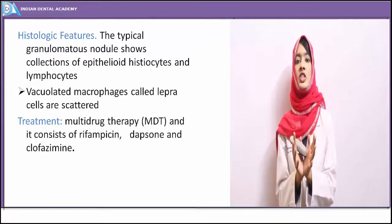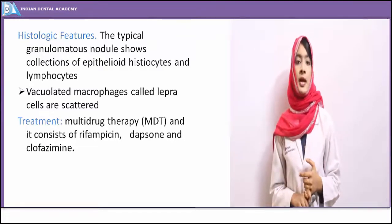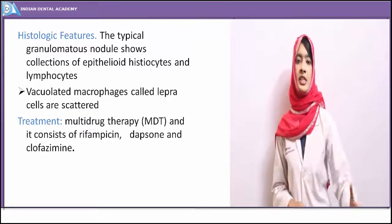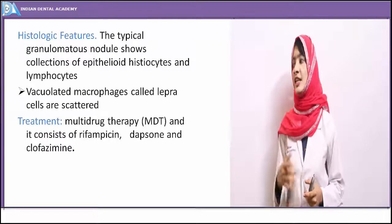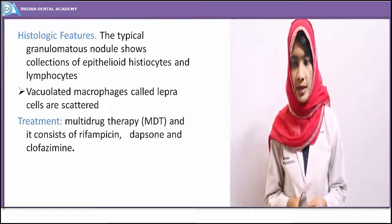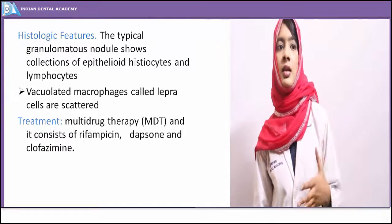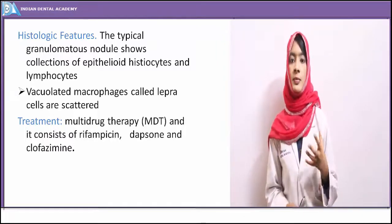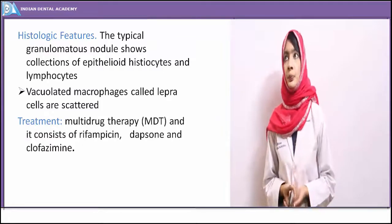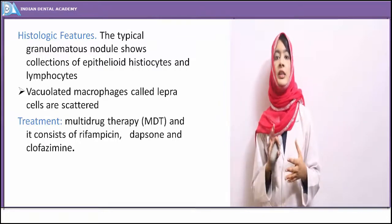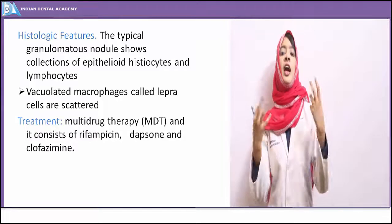Microscopically, leprosy is a granulomatous lesion showing collections of epithelioid cells, lymphocytes, histiocytes, and vacuolated macrophages. Sheets of lymphocytes are scattered in the nodular lesion — these vacuolated macrophages are called lepra cells. Treatment for lepromatous lesions includes multi-drug therapy: rifampicin, dapsone, and clofazimine. The disease is chronic and progressively disfiguring.